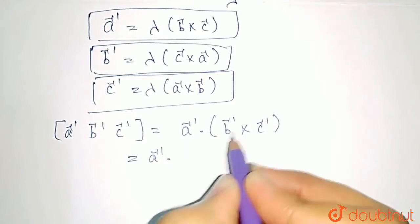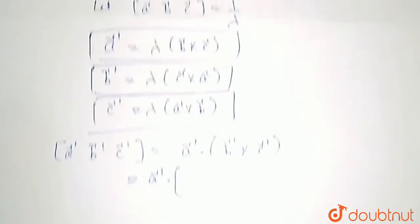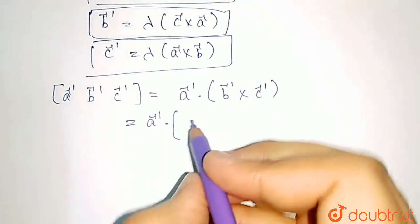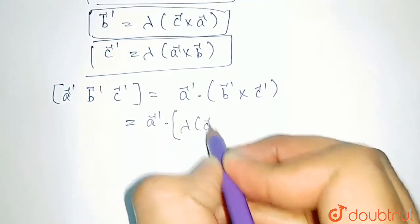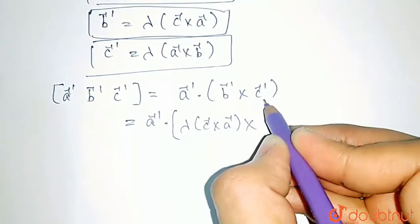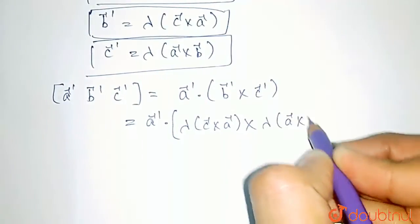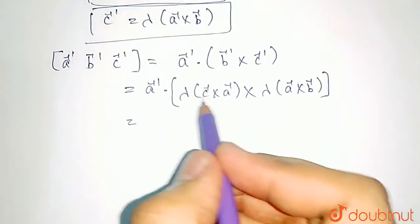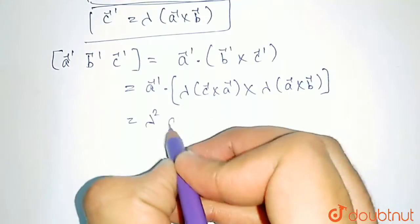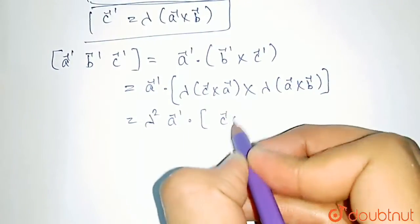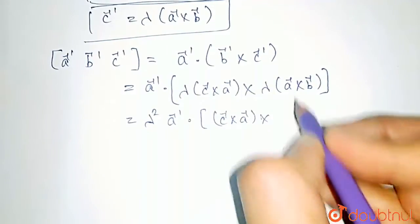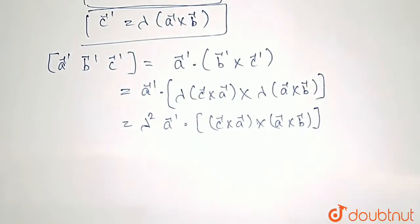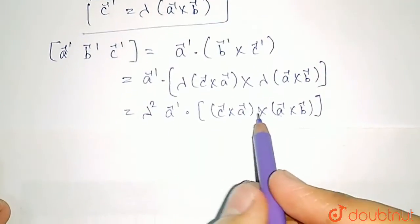Now substituting the value of B' and C' here: B' is equal to lambda times C cross A, and C' is equal to lambda times A cross B. Substituting that, it would be A' dot (lambda times C cross A) cross (lambda times A cross B). Here lambda into lambda is a constant, so lambda squared is taken outside, giving A' vector dot (C cross A) cross (A cross B).